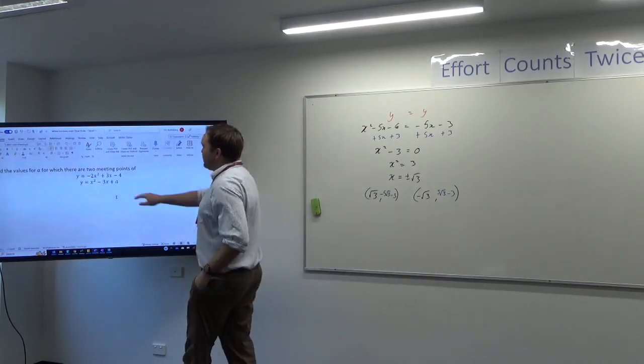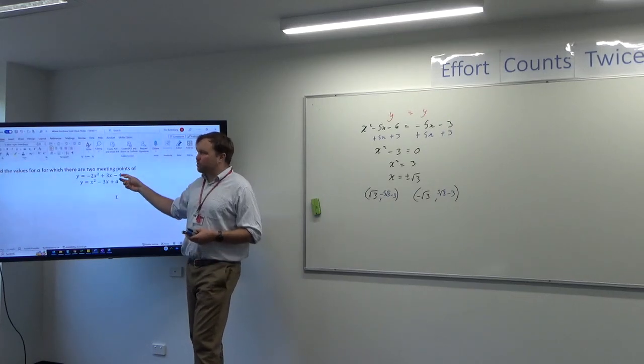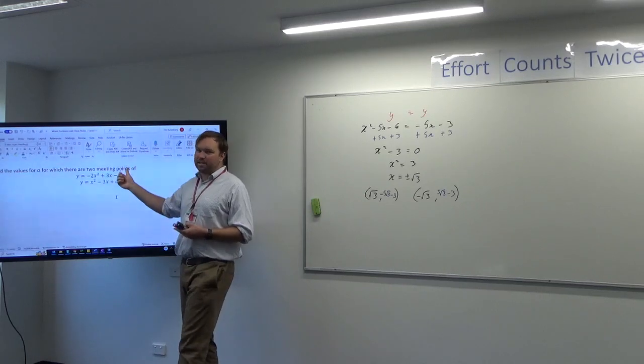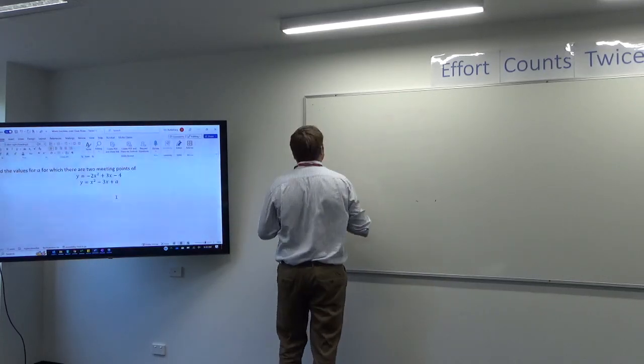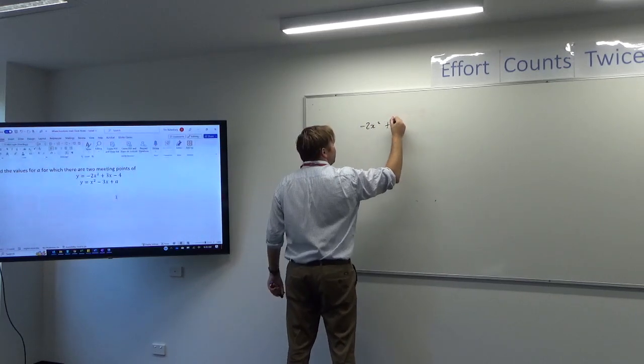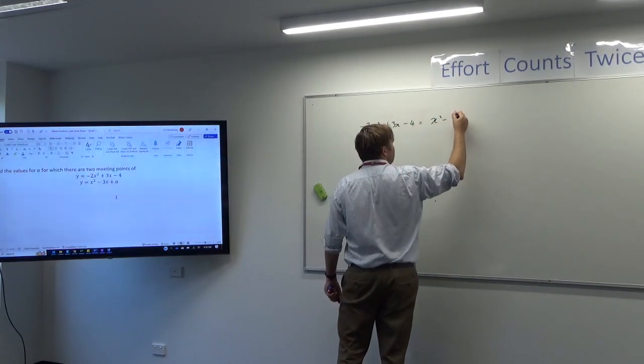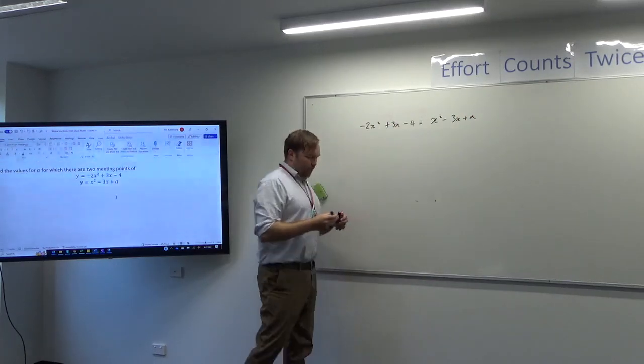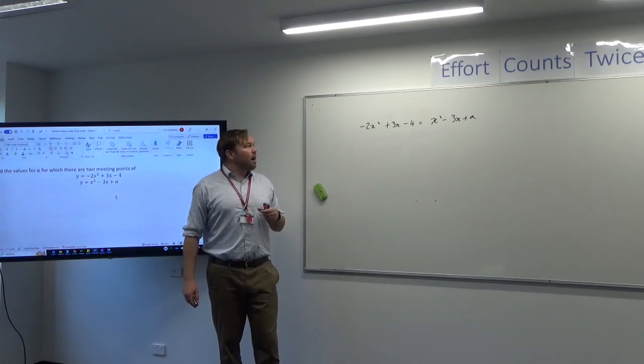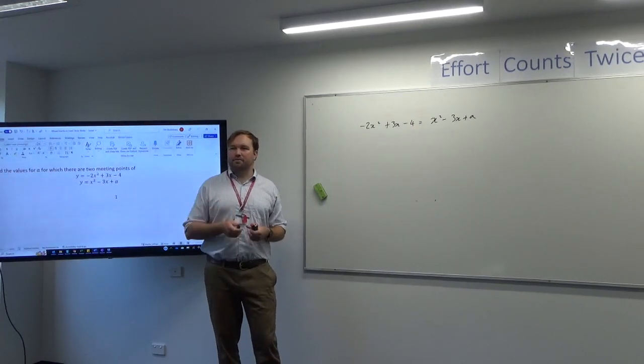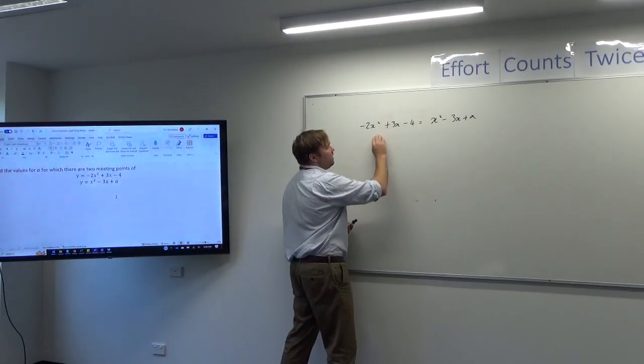So seeing visually is one thing, but you don't have Desmos in this act, so we have to be able to do it algebraically as well. Find the values of A for which there are two meeting points. The plan here is to set these equal to each other, generate a quadratic, and then find where the discriminant is positive. If the discriminant is positive, there will be two meeting points. So our setup here is: set the equations equal to each other, minus 2x squared plus 3x minus 4 equals x squared take 3x plus A.